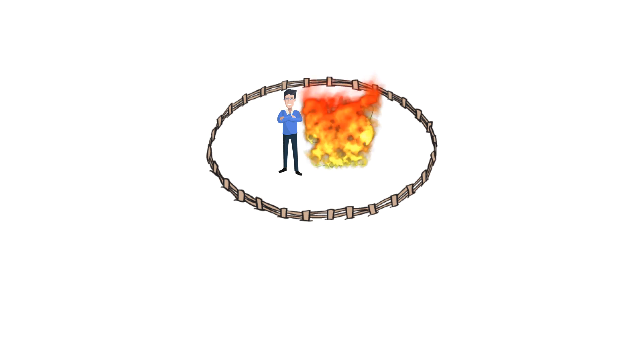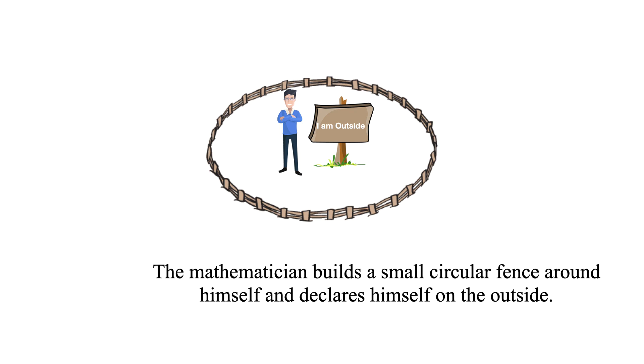This is the most important point. Just after building a small circular fence around himself, he declares himself on the outside. In this way, the mathematician built a fence to the whole world just by using minimal fencing. He is the only one outside the fence.